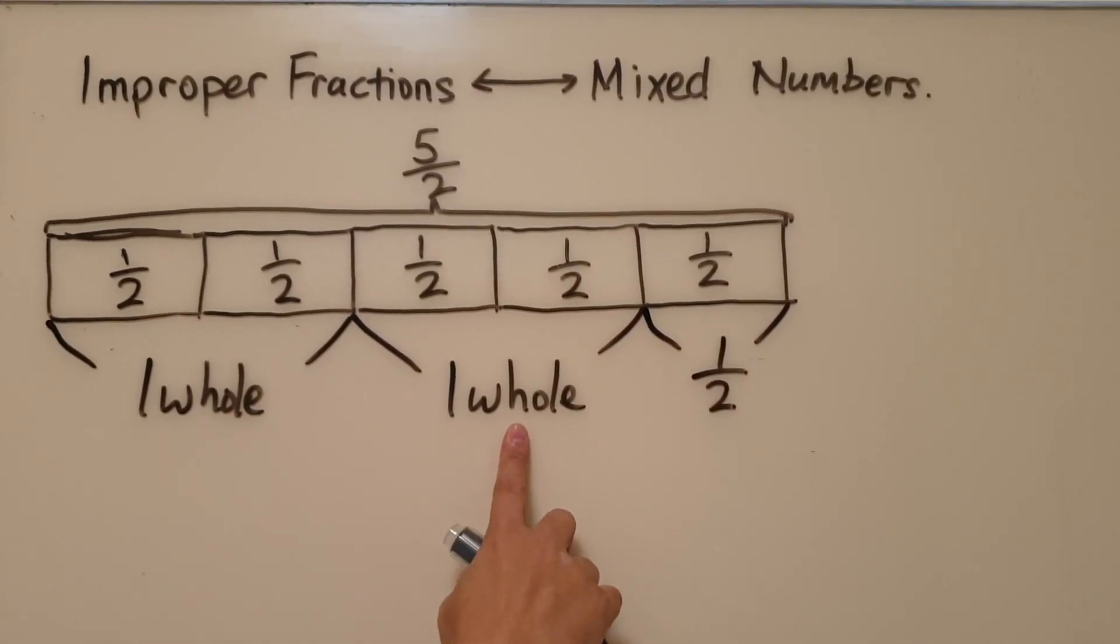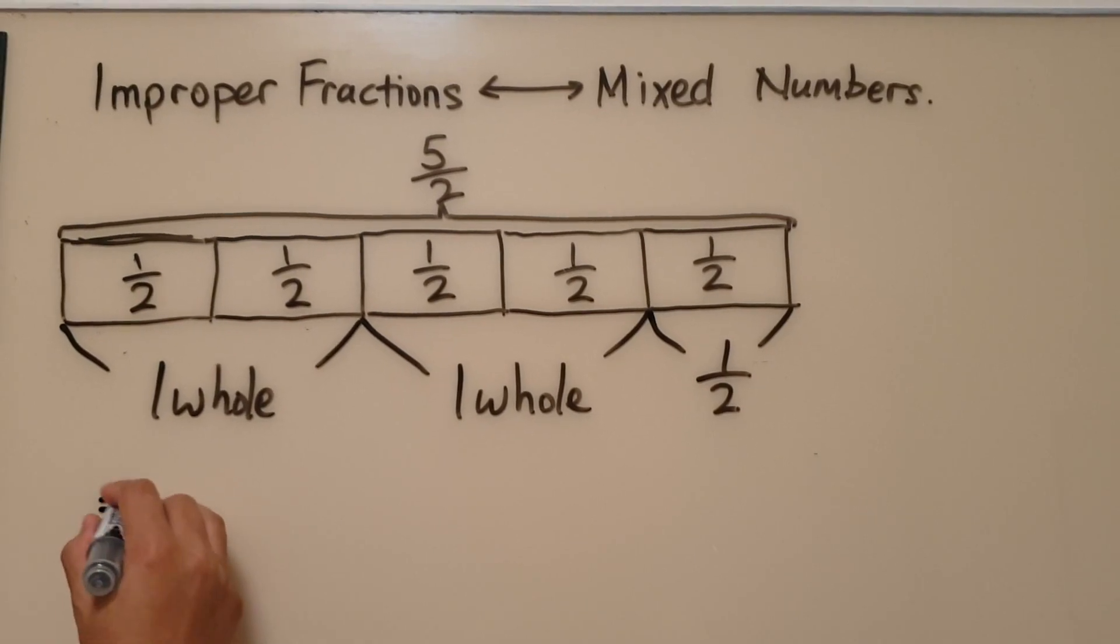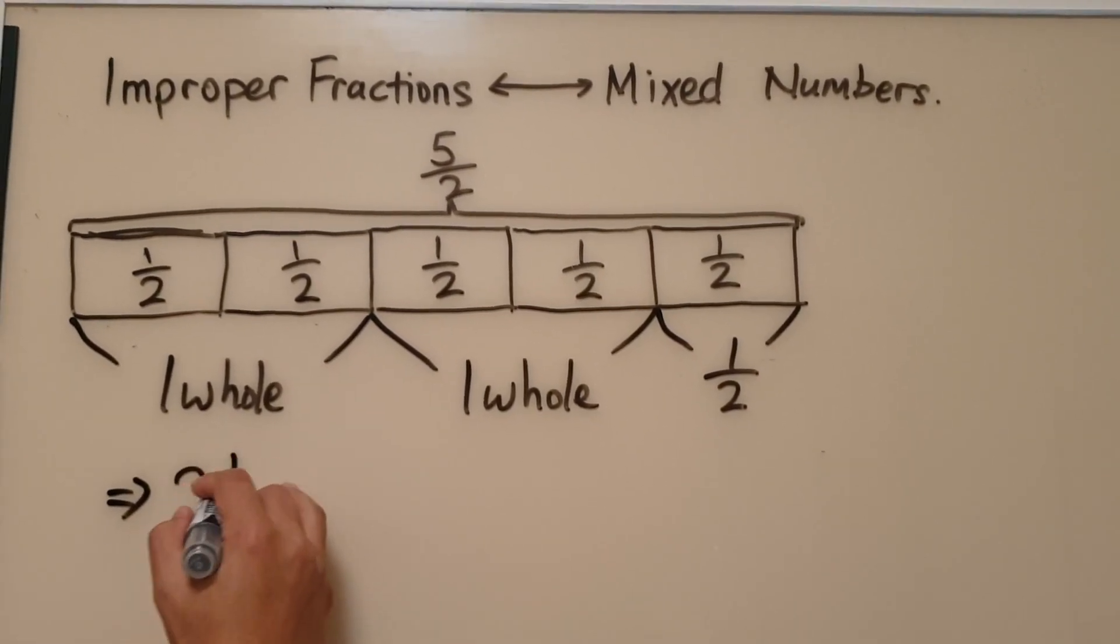One whole, another whole, and half. This gives us the equivalent of 2 wholes and a half.